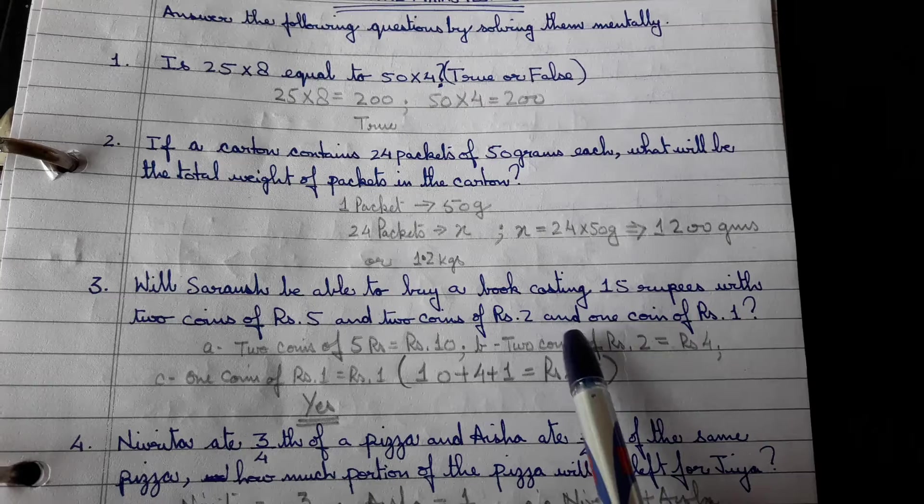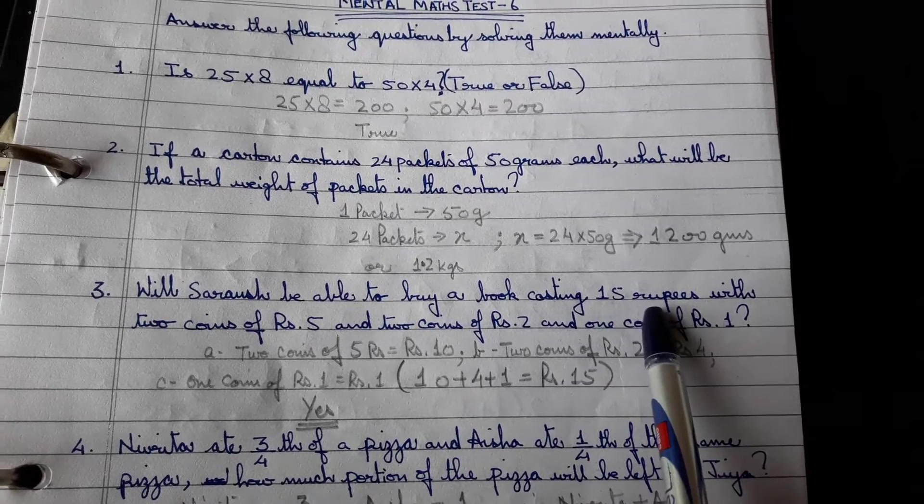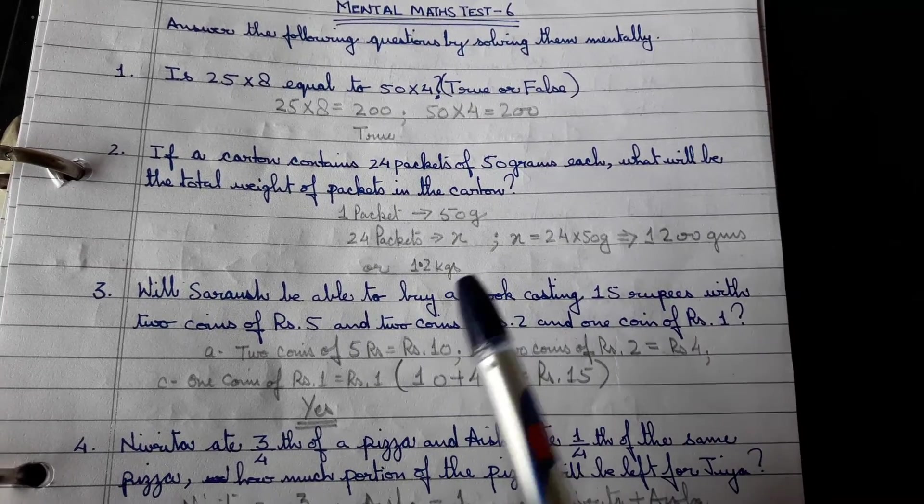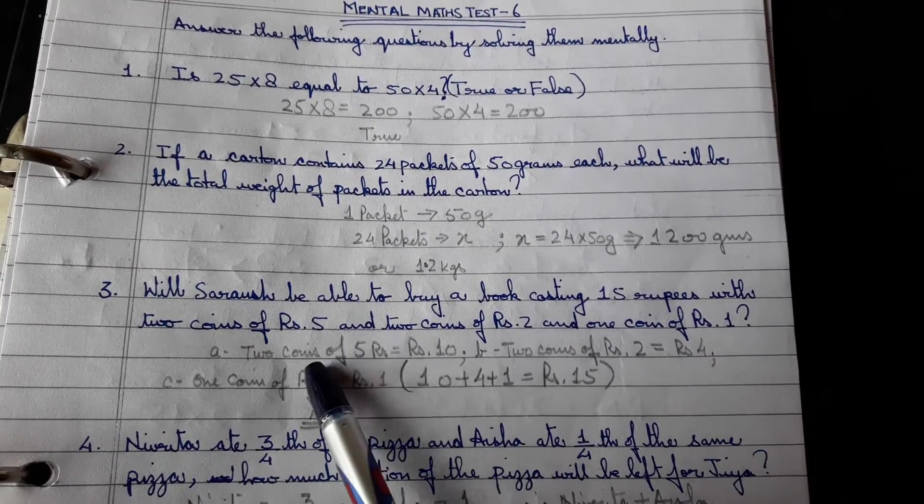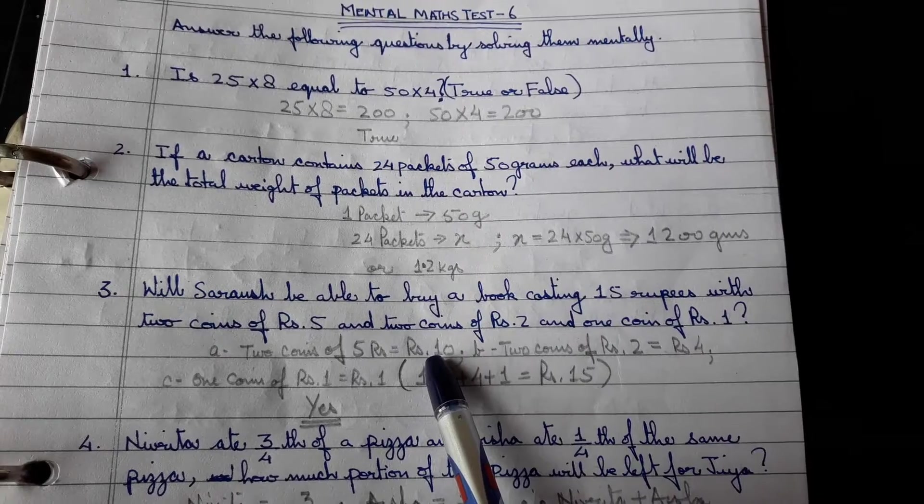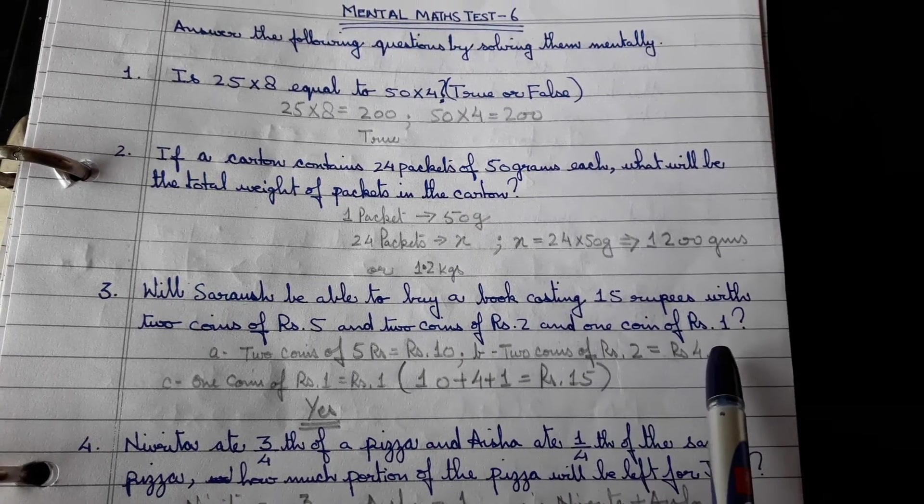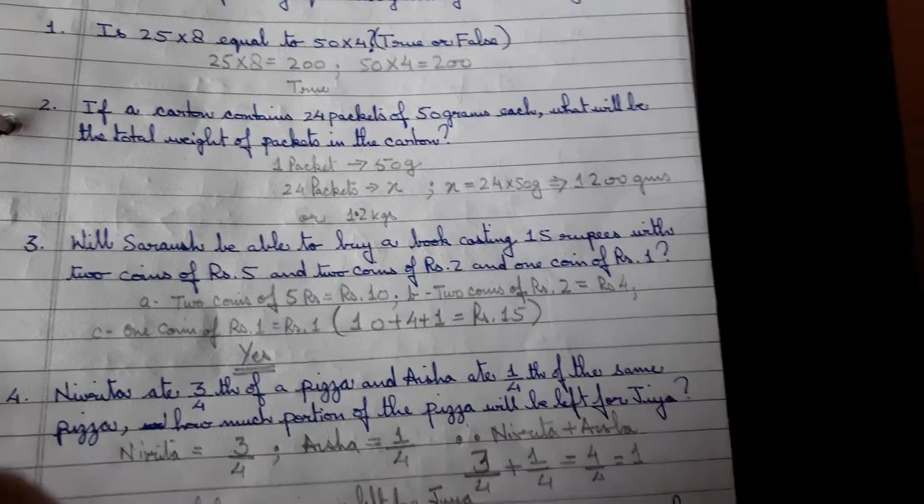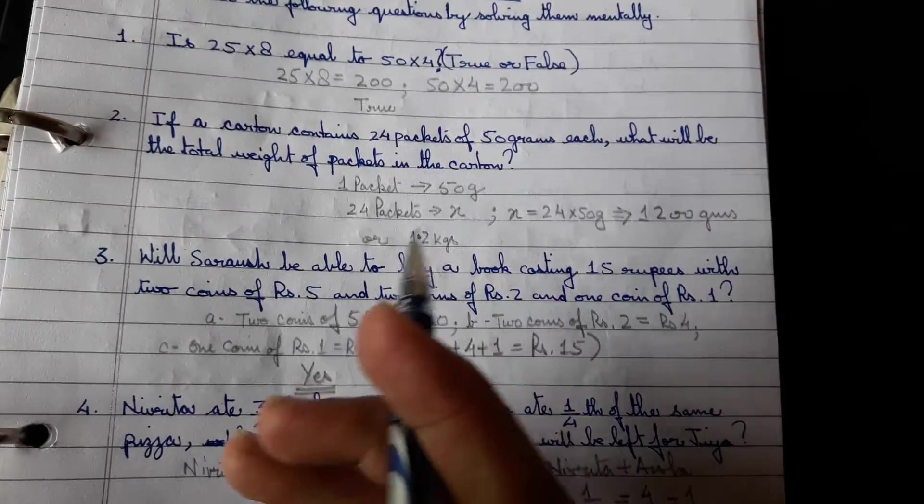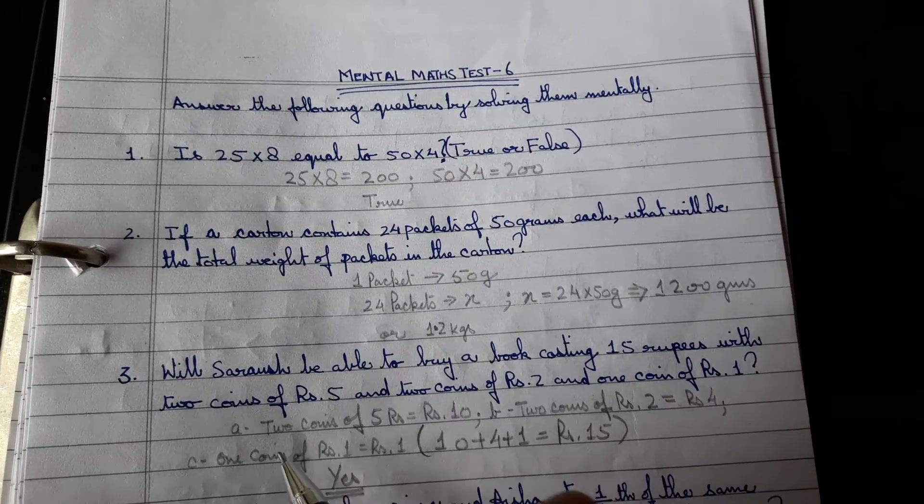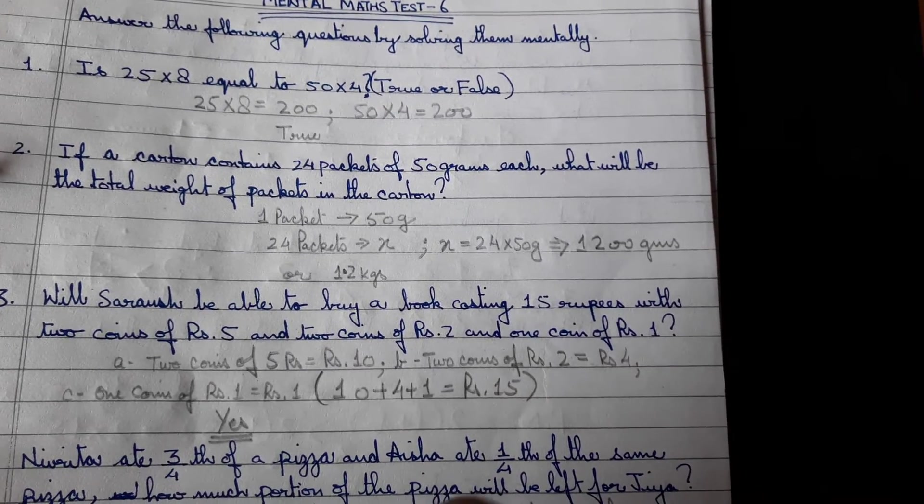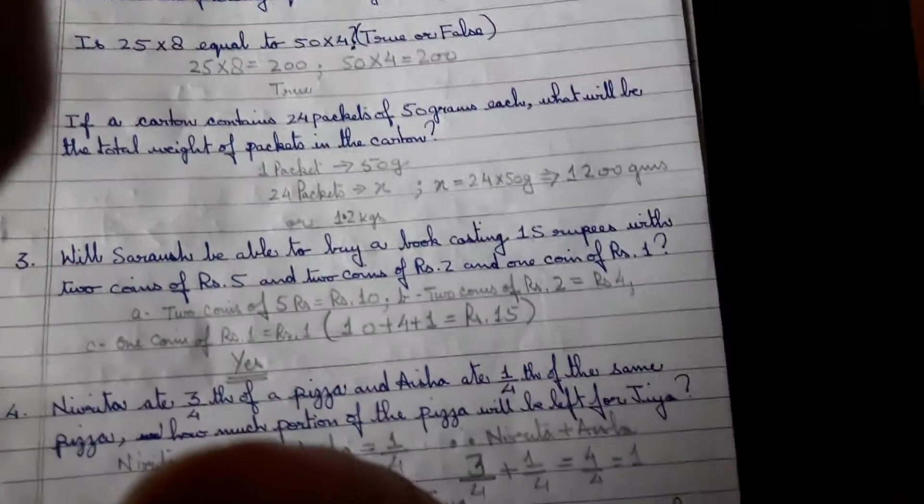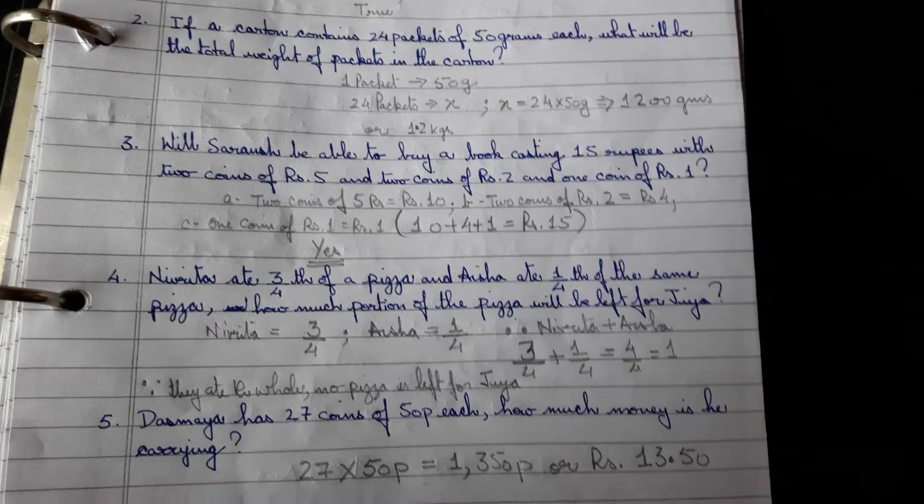Will Saranj be able to buy a book costing 15 rupees with 2 coins of rupees 5 and 2 coins of rupees 2 and 1 coin of rupee 1? So just let's see what happens, a quick calculation. 2 coins of 5 rupees is rupees 10, 2 coins of rupees 2 is rupee 4, and 1 coin of rupee 1 is rupee 1. So add 10 plus 4 is 14 plus 1 is 15. Yes, he would be able to buy.